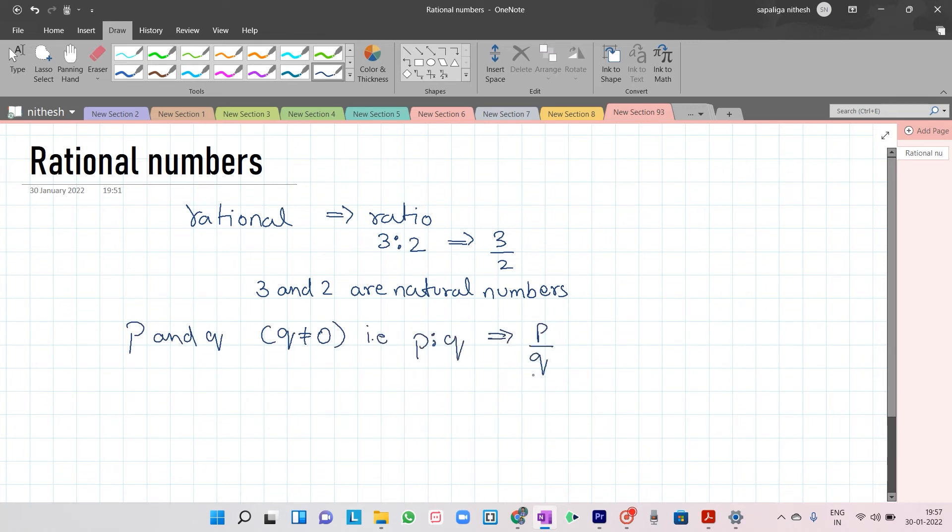This is the form in which rational numbers are expressed. A rational number is defined as a number that can be expressed in the form of p upon q, where p and q are integers and q is not equal to 0.